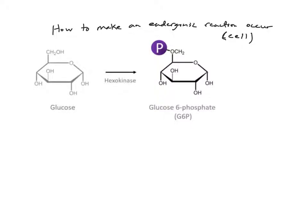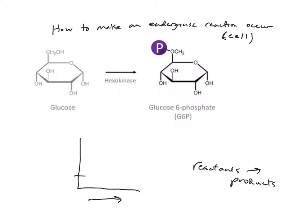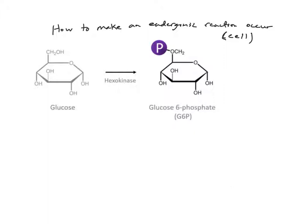Here we're going to talk about how to make an endergonic reaction occur. An endergonic reaction is one where the reactants have less energy than the products. As the reaction occurs we go from reactants to products, and if the reactants have a lower energy level than the products on the y-axis, that is an uphill reaction — an endergonic reaction, meaning it needs energy in order to occur. Exergonic reactions give off energy; endergonic reactions take energy.